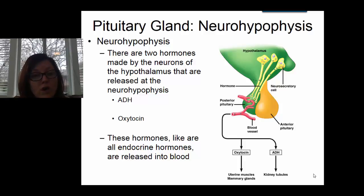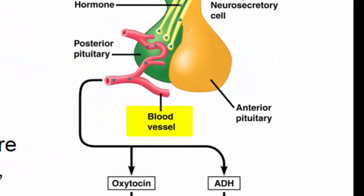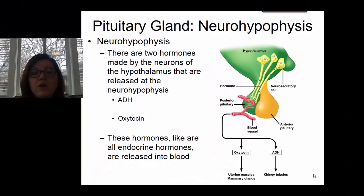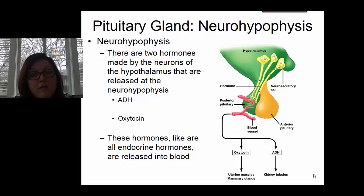Like all endocrine hormones, ADH and oxytocin are released into the bloodstream. So in this example, we have neurons releasing a chemical into the bloodstream. Normally when neurons release a chemical, we call it a neurotransmitter, but we don't call it a neurotransmitter if the chemical is being released into the bloodstream — we call it a hormone.